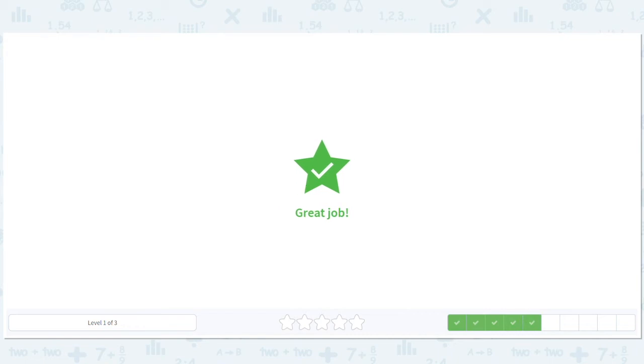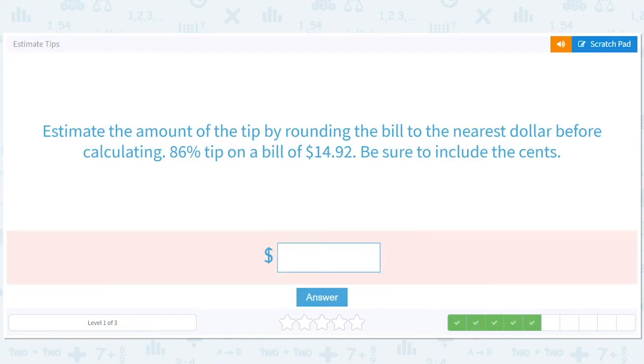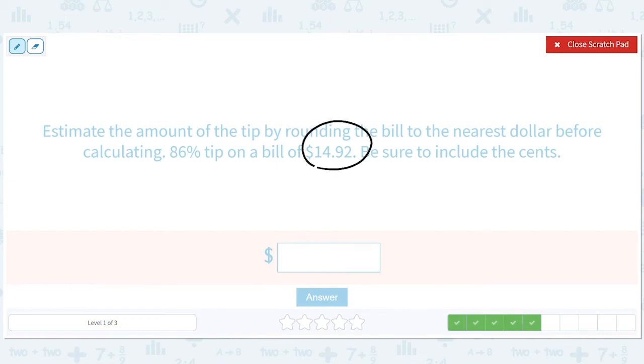It's kind of fun. It makes me feel like going out. Estimate the amount of the tip by rounding the bill to the nearest dollar before calculating. 86% tip on a bill of $14.92. That's when Columbus sailed the ocean blue. At least that's what we were taught, but we're finding out a lot of bad things about Columbus, kids.